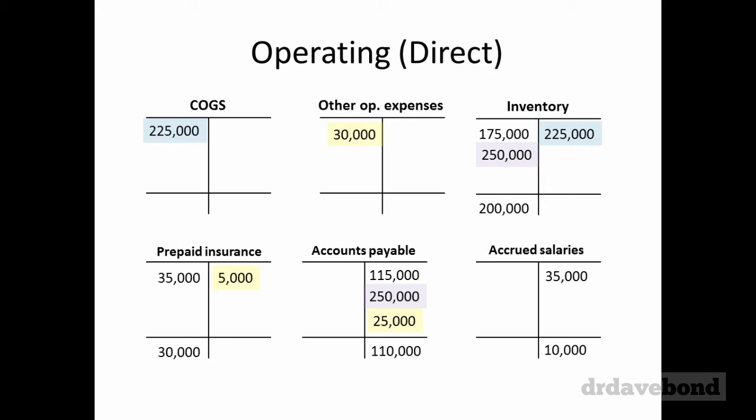Accounts payable is now dealt with. We have 115,000 plus 250,000 plus 25,000, which doesn't equal 110,000, so we need something on the debit side. That amount is $280,000 — the amount paid to suppliers — so debit accounts payable $280,000, credit cash $280,000.